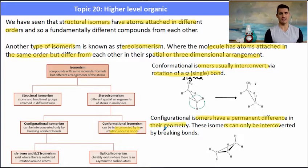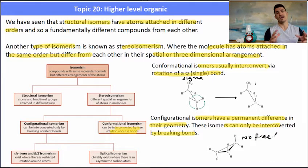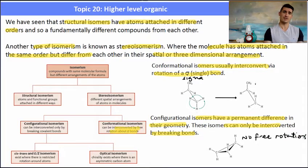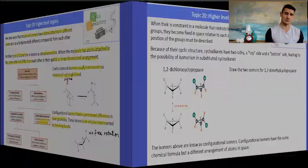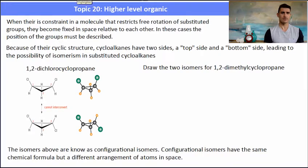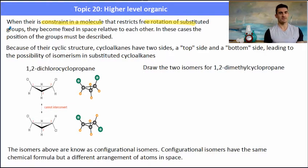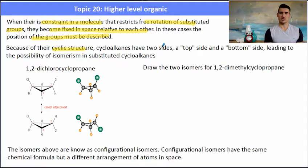A configurational isomer is one where there is restriction in the molecule and they have a permanent difference in their geometry. The only way to form one isomer from the other would be to break the bonds — you can't simply rotate it because there's restriction. When there is this constraint or restriction in a molecule, we have atoms or groups of atoms that are fixed in space, and in these cases we need to describe the position of those groups.